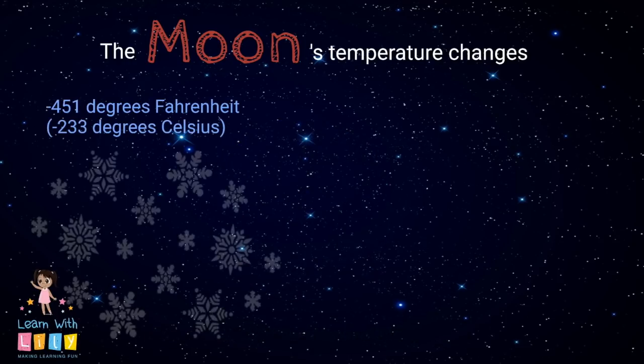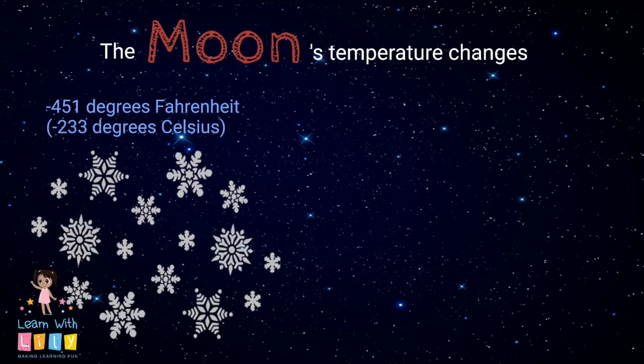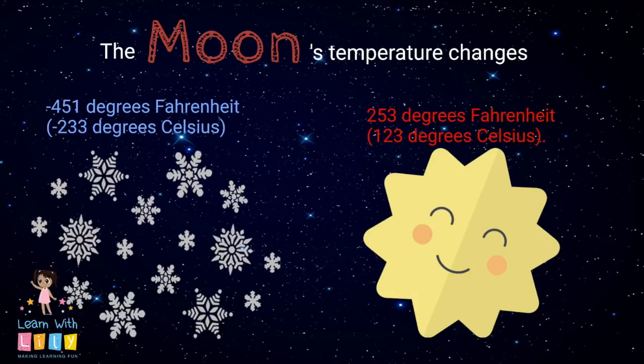The temperature of the Moon changes all the time, and can range from minus 451 degrees Fahrenheit to 253 degrees Fahrenheit. Whoa, what a change.